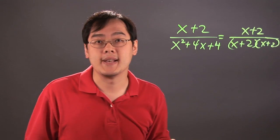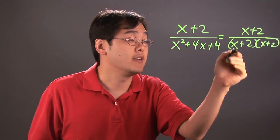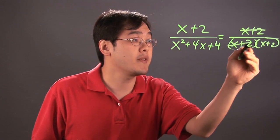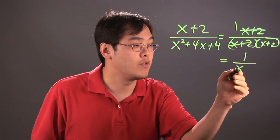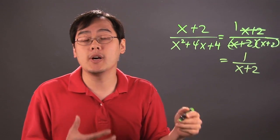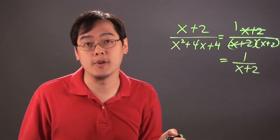The numerator has an x plus 2 as well. What happens here is that this x plus 2 will cancel with one of the x plus 2, since you're left with a 1 at the top, and you have 1 over x plus 2. That's an example of a fraction that is reducible with a binomial and a trinomial.